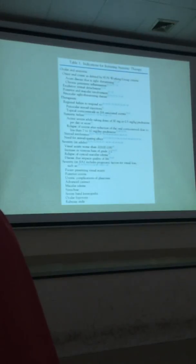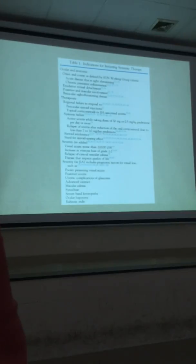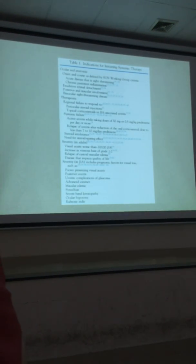Here are some indications for initiating systemic therapy. If there's sight-threatening disease, posterior macular involvement, if the patient is not responding to the current level of treatment, if there's intolerance of steroids — side effects like uncontrolled intraocular pressure, uncontrolled hypertension, or blood sugars, severe diabetes. People who have poor vision on presentation, more posterior disease, more severe disease — you're going to have a lower threshold for using immunomodulatory therapy.